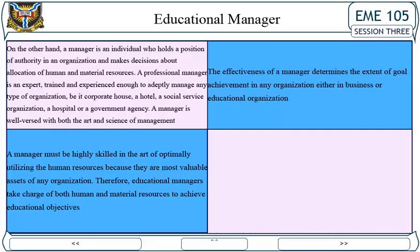Educational manager: A manager is an individual who holds a position of authority in an organization and makes decisions about allocation of human and material resources. A professional manager is an expert trained and experienced enough to adeptly manage any type of organization — be it a corporate house, a hotel, a social service organization, a hospital, or a government agency. A manager is well versed with both the art and science of management. An educational manager is an individual who holds a position of authority in an organization and makes decisions about allocation of human and material resources. A manager must be highly skilled in the art of optimally utilizing human resources because they are the most valuable assets of any organization.